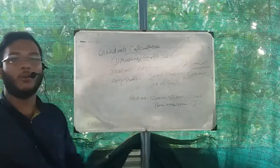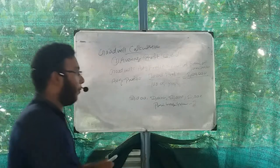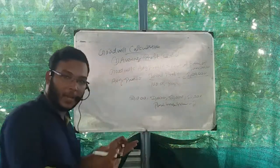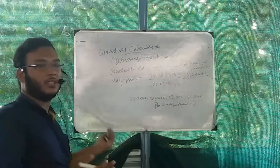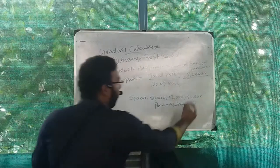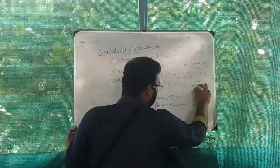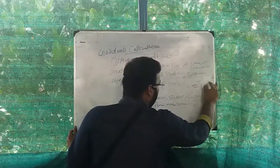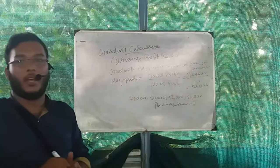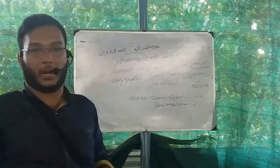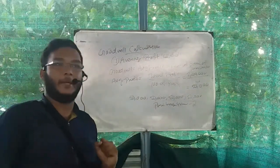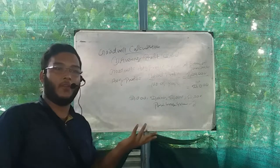So the total profit is 2 lakh. Then 2 lakh divided by number of years equal to 4. 2 lakh divided by 4 equal to 50,000. That is the average profit. Average profit is 50,000.